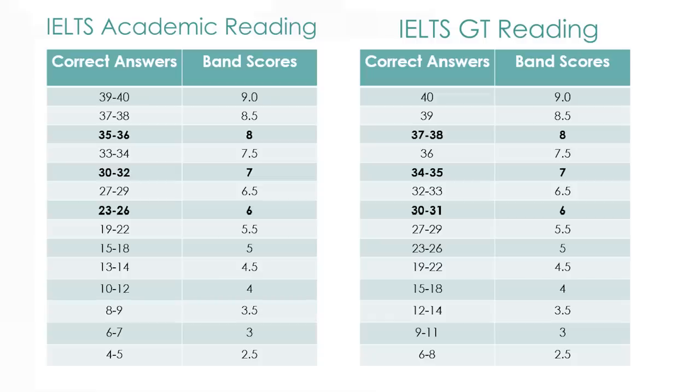I got 8.5 in the academic test, which means that I answered 37 or 38 questions correctly. And indeed, I couldn't find several answers. In the general training test, I would only be allowed to make one mistake to achieve the same score. And you need no mistakes at all to achieve the top score in the general training test, but can get one question wrong in the academic test.